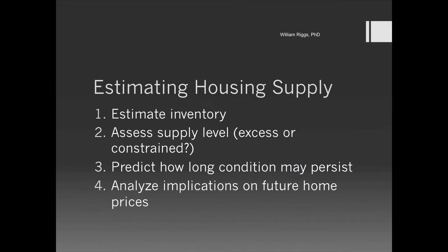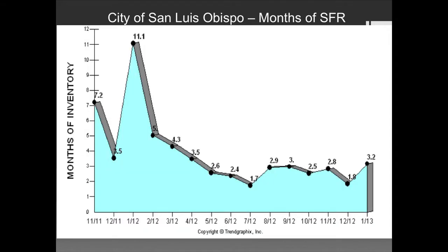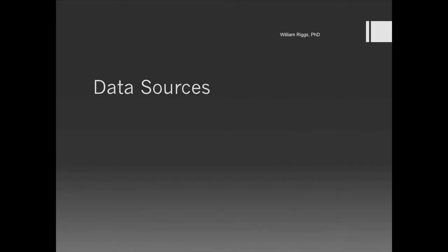Going back to our framework for estimating supply: if we know the supply is constrained and we can predict it's been going on for six months and may continue for another six months to a year, what are the implications for housing prices? In this case, as in many cities in California, there has been an equal spike in housing prices. Let's go look at some data sources on the internet that actually support that.